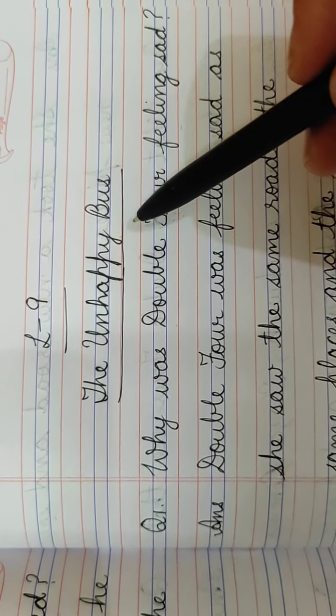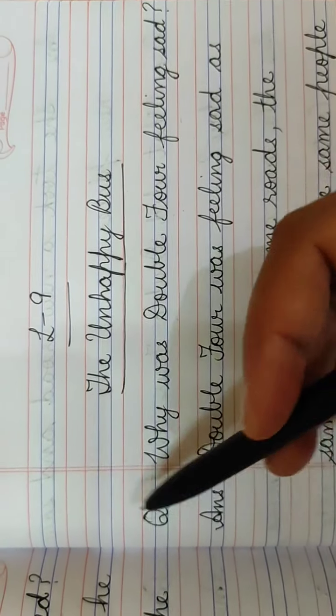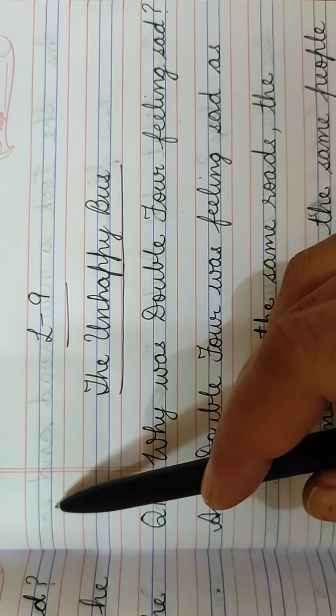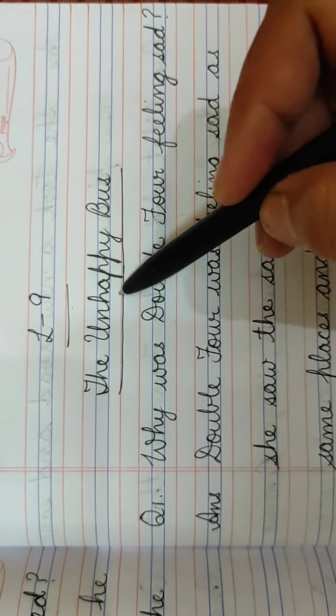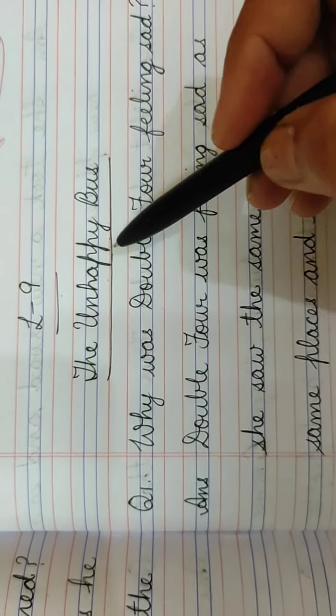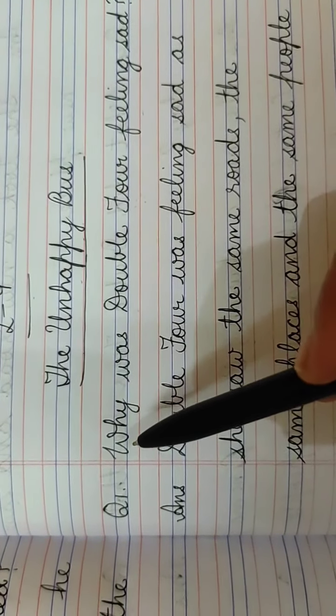So take out your English 2 copies, take out a new page, write the date on the left side of the margin, then write lesson 9 on the first line, name of the lesson The Unhappy Bus on the second line, and now we are going to start with the question answers.